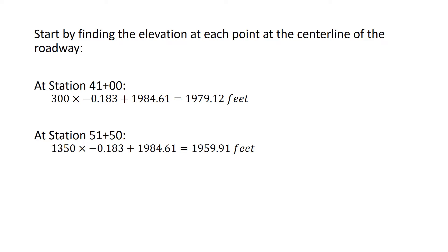Similarly, at station 51 plus 50, we're now 1,350 feet from our reference location. We multiply that by the constant slope of 1.83%, add it to the reference elevation, and find a centerline elevation at station 51 plus 50 of 1,959.91 feet.